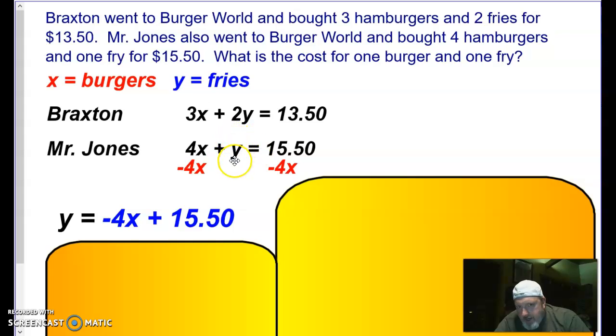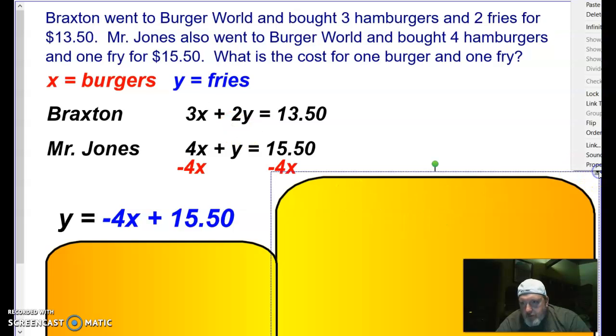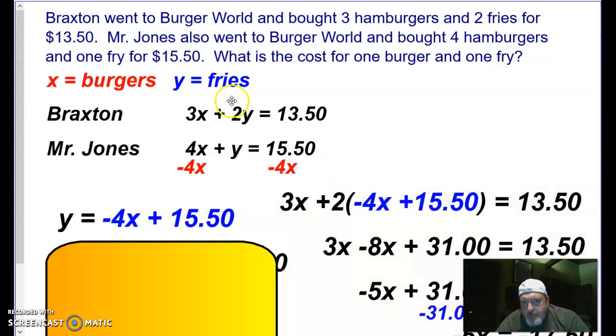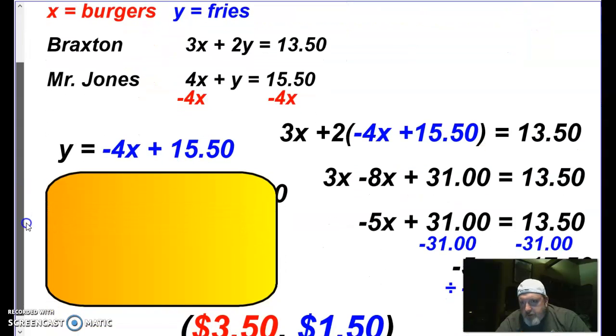Again, you see that one Y, so that's the one I'm going to isolate first. So I subtracted 4X here, and Y is negative 4X plus $15.50. That's what I want. I want to get down to Y equals or X equals. Now that I know that, I'm going to plug it back into this equation here. I'm going to plug this into Braxton's equation, which will allow me to solve for X. So notice this is Braxton's equation now, 3X plus 2Y, but I replaced Y with negative 4X plus $15.50. Got to distribute here. So 2 times negative 4X is negative 8X. 2 times $15.50 is $31.